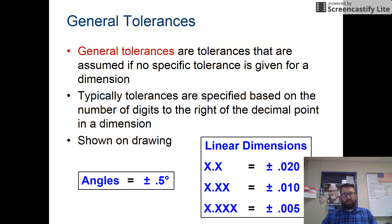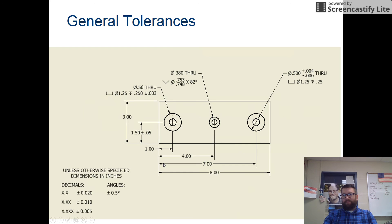General tolerances are assumed if no specific one is given for a dimension. Typically, they're specified based on the number of digits to the right of the decimal point. For example, if the dimension is dimensioned to a tenth of an inch, then we allow plus or minus 0.02. If it's dimensioned to a hundredth of an inch, we allow plus or minus 0.01. And if it's dimensioned to a thousandth of an inch, we'll allow plus or minus 0.005. Here, this is of a general tolerance on a drawing.